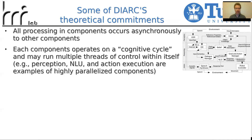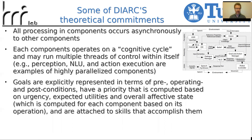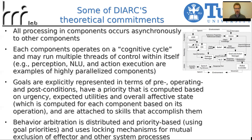The architecture can have multiple threads of control; for example, perception, NLU, and action-execution components are all highly parallelized. Goals are explicitly represented in terms of pre- and post-conditions and have priority computed based on urgency, expected utilities, and the overall affective state of the system. These urgency evaluations are attached to skills that accomplish them. Behavior arbitration is distributed and priority-based, using locking mechanisms for mutual exclusion.